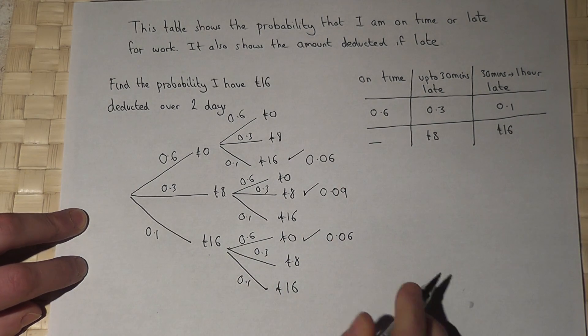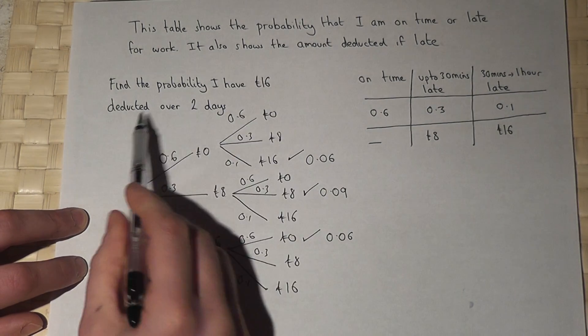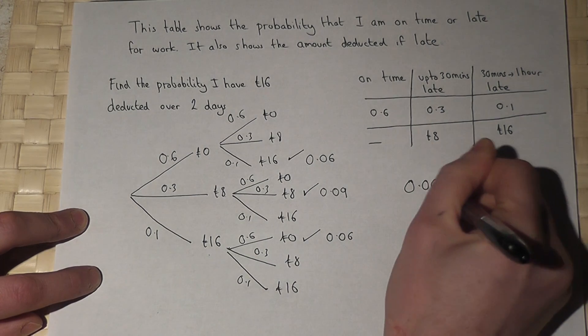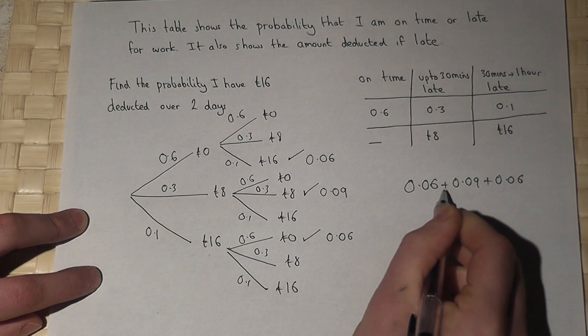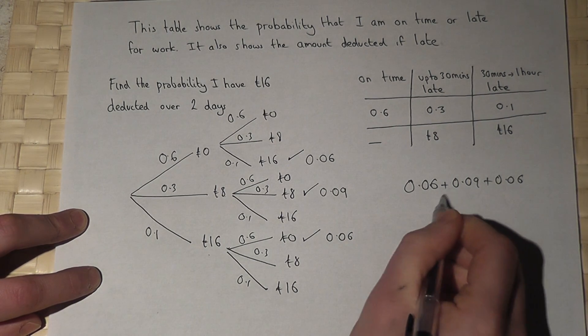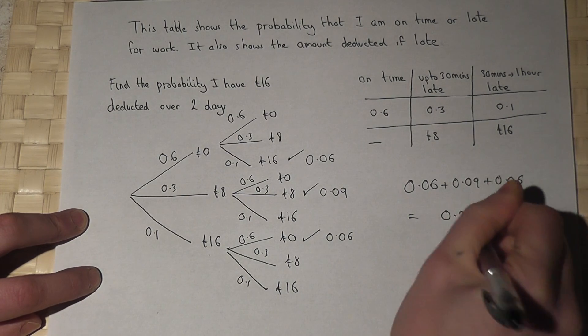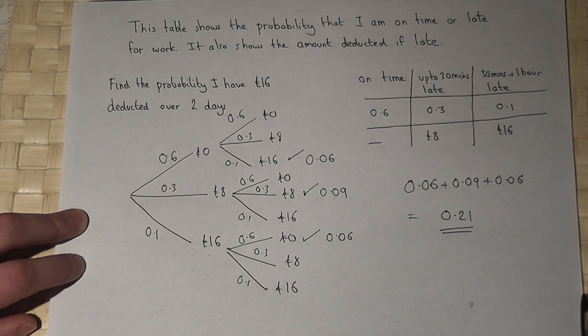Therefore the chance of having exactly £16 deducted is the sum of these three options: 0.06 plus 0.09 plus 0.06 equals 0.21. So that's the chance of having £16 deducted over two days.